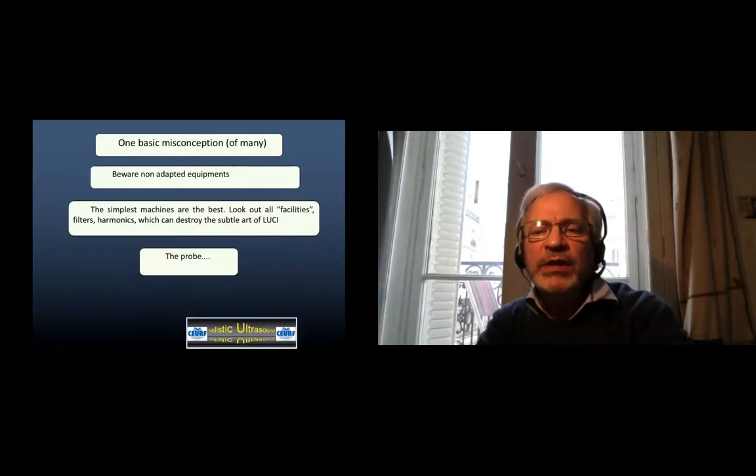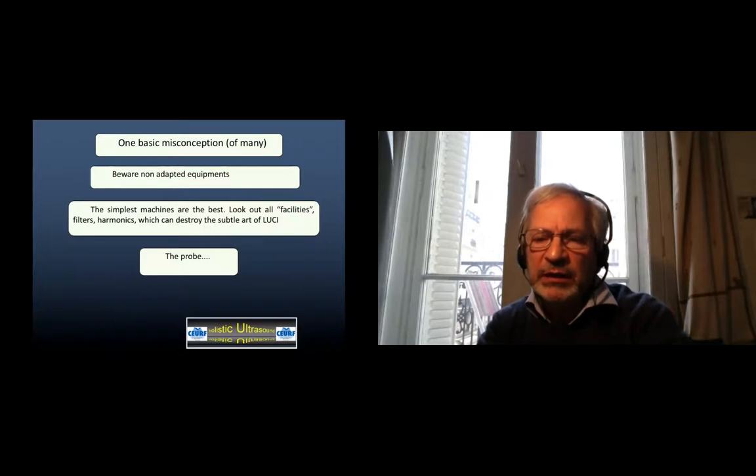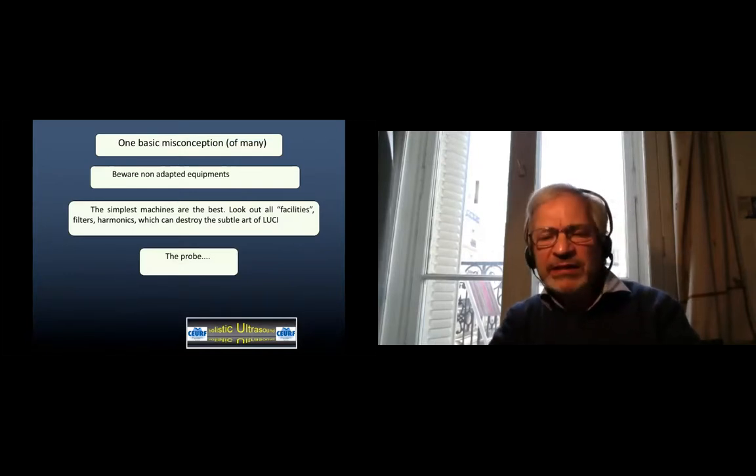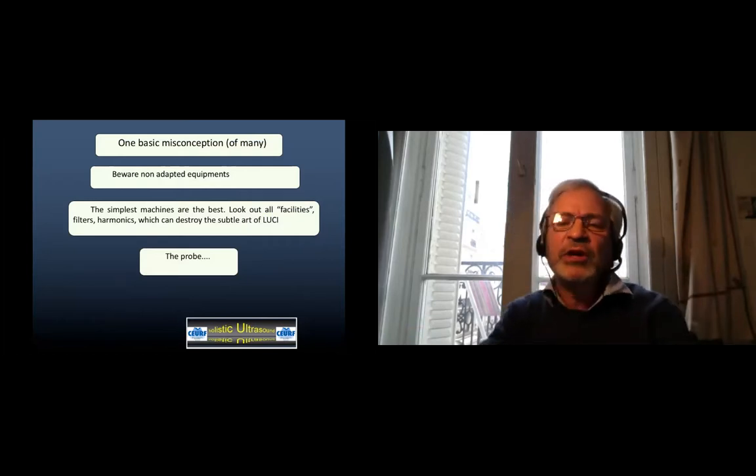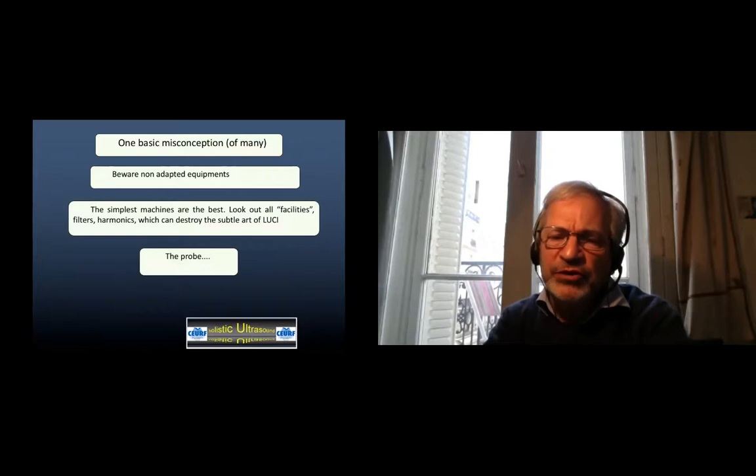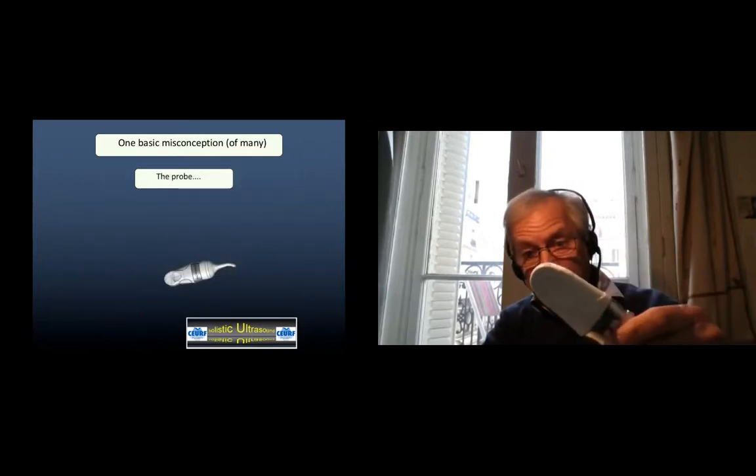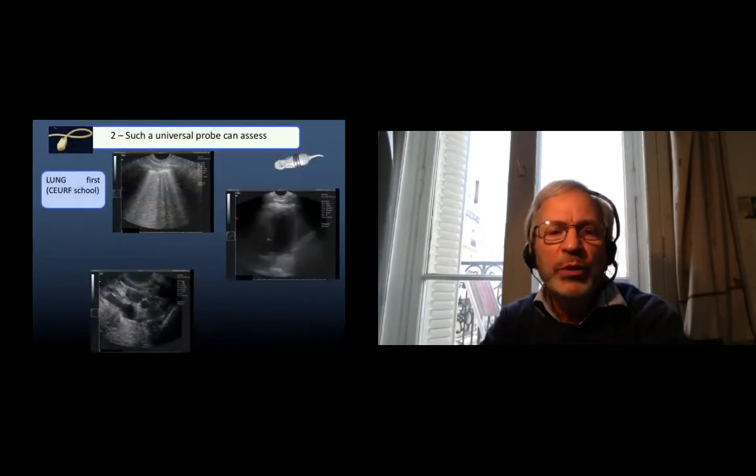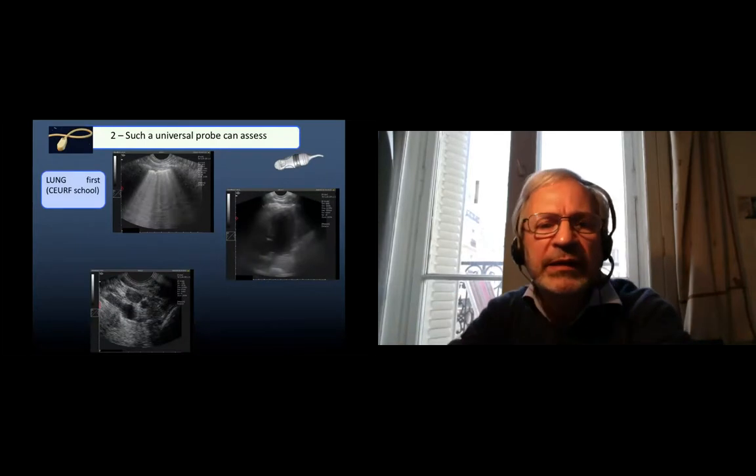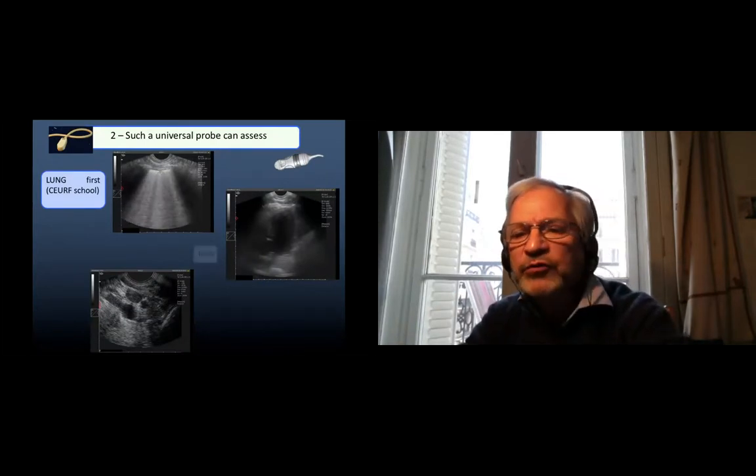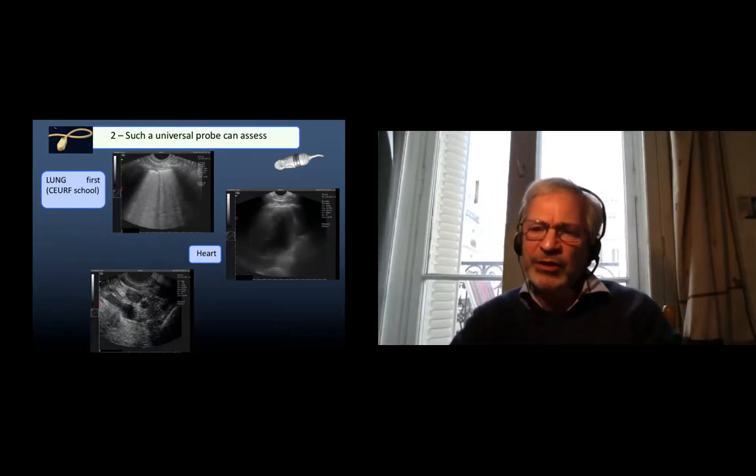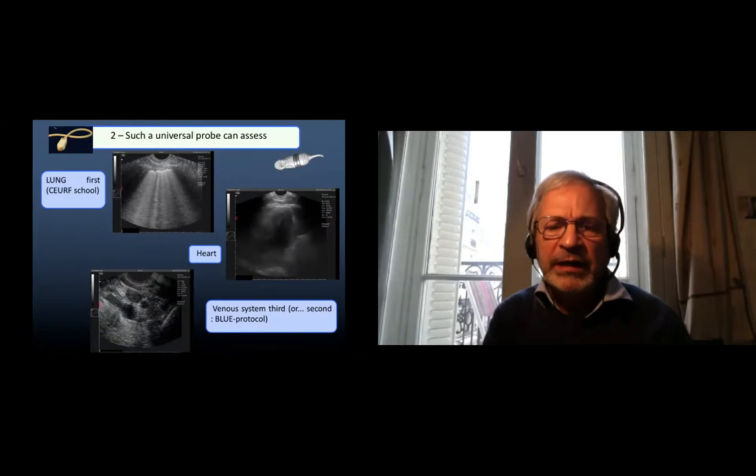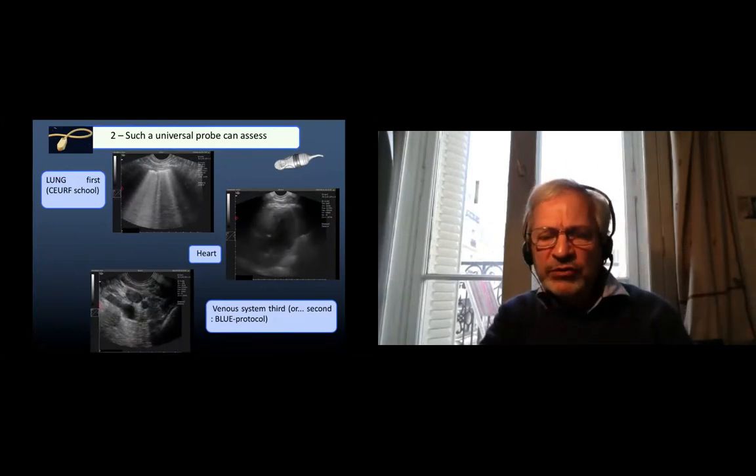Beware non-adapted equipment. The simplest machines are the best. The very modern machines have facilities that are filters, harmonics, and plenty of devices of sophistication which can destroy the lung ultrasound, which is a subtle art. The probe, this is the one we use by the way. And we use the philosophy of one probe universal for the whole body. This is a modern machine now where I can see clearly a very diseased lung, but if I want to see the heart with the same probe, I have a clear vision of here the pericardial and left ventricle status, that is simple echocardiography. And if I want to see the veins, I can see clearly a complete thrombosis of the jugular vein.